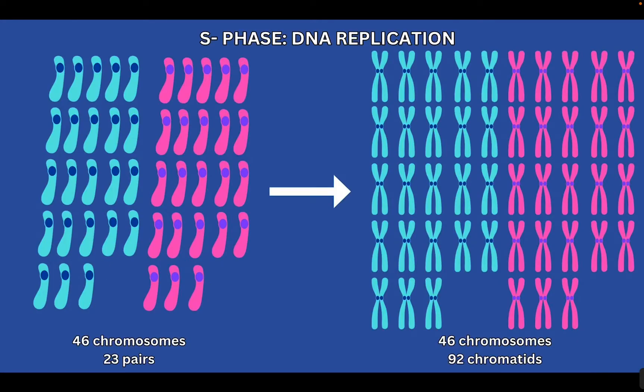These next slides have nothing to fill in the guided notes. This is a concept that's really difficult in terms of better understanding what's going on in meiosis, so I wanted to take some time to explain it so that it makes sense when we go over the stages. In interphase, there's a step called S-phase. S stands for synthesis, because we are synthesizing a copy of DNA — we are doing DNA replication.